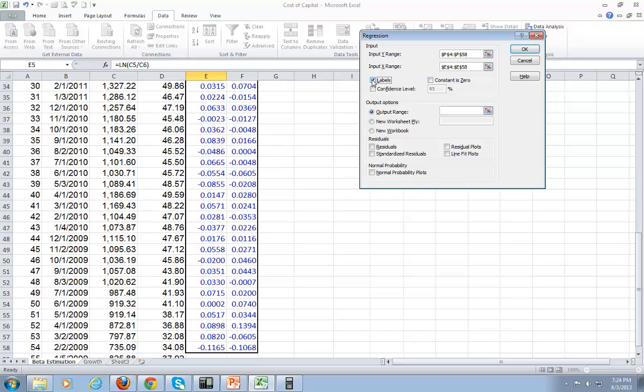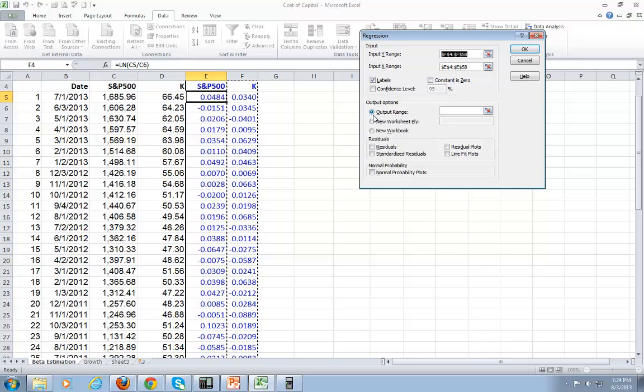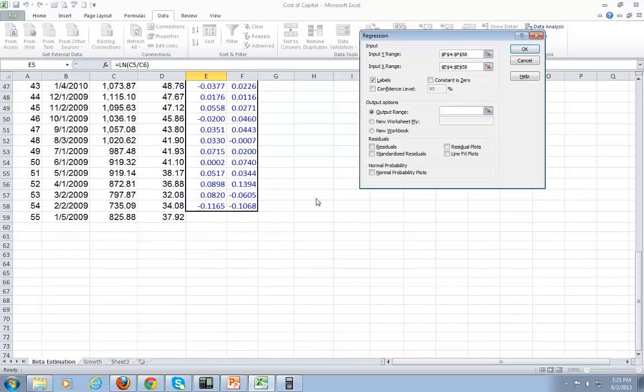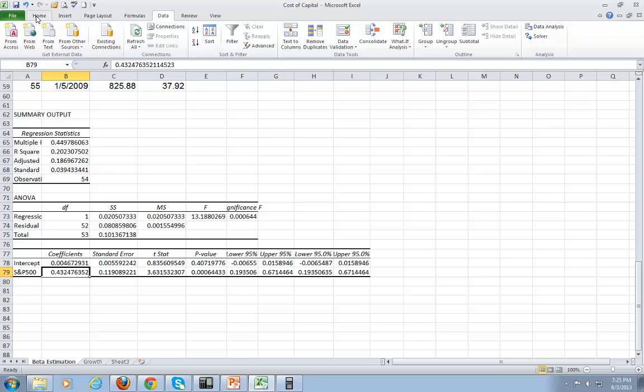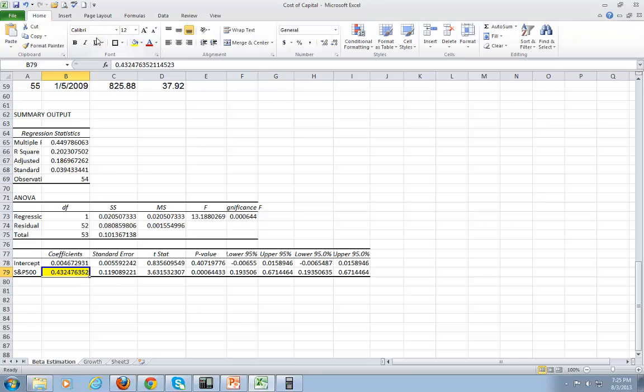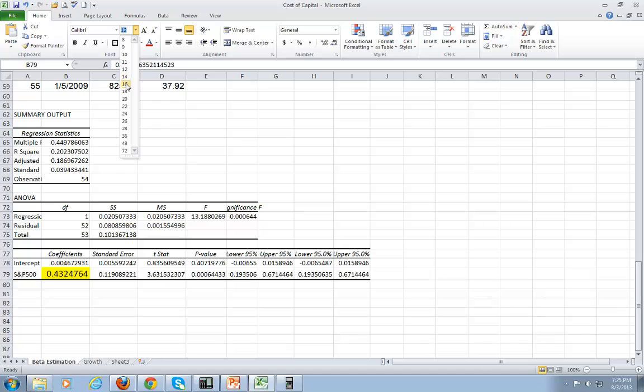Click here for output range and then click right here. While cursor is blinking there, I come down, find a spot on the spreadsheet, click it. When I click it, it registers right here. That's our beta estimate for this particular stock. It comes out to be approximately 0.43 for the Kellogg's stock.